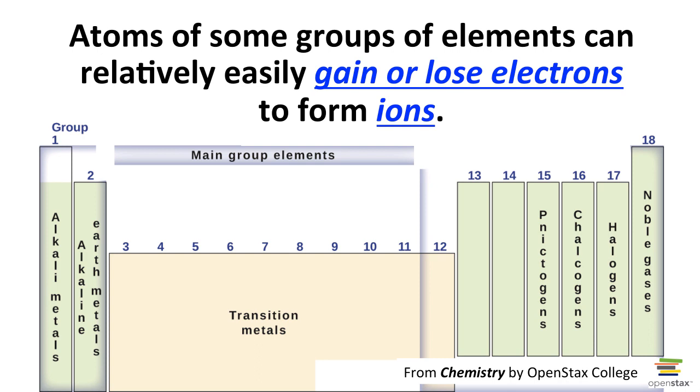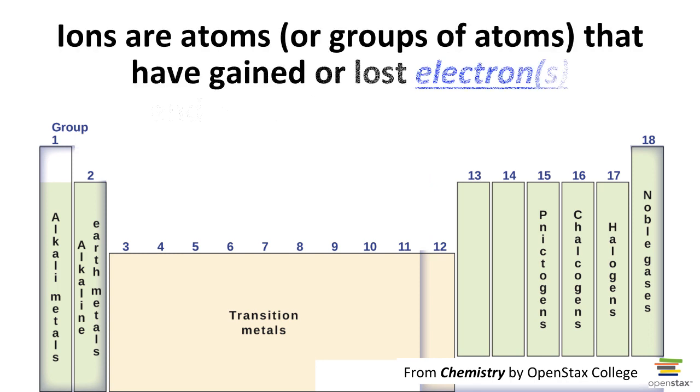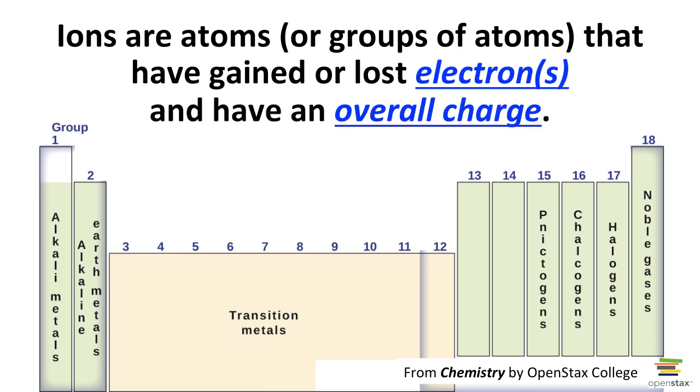Atoms of some groups of elements can fairly easily gain or lose electrons, and when they do that, they form what are called ions. Ions are atoms, or they could be groups of atoms, that have either gained or lost electrons and have an overall charge. As an example, the alkaline metals, lithium, sodium, potassium, etc., all can easily lose one electron, and therefore with one less negative charge, they have an overall positive charge, so they form positive one charged ions.